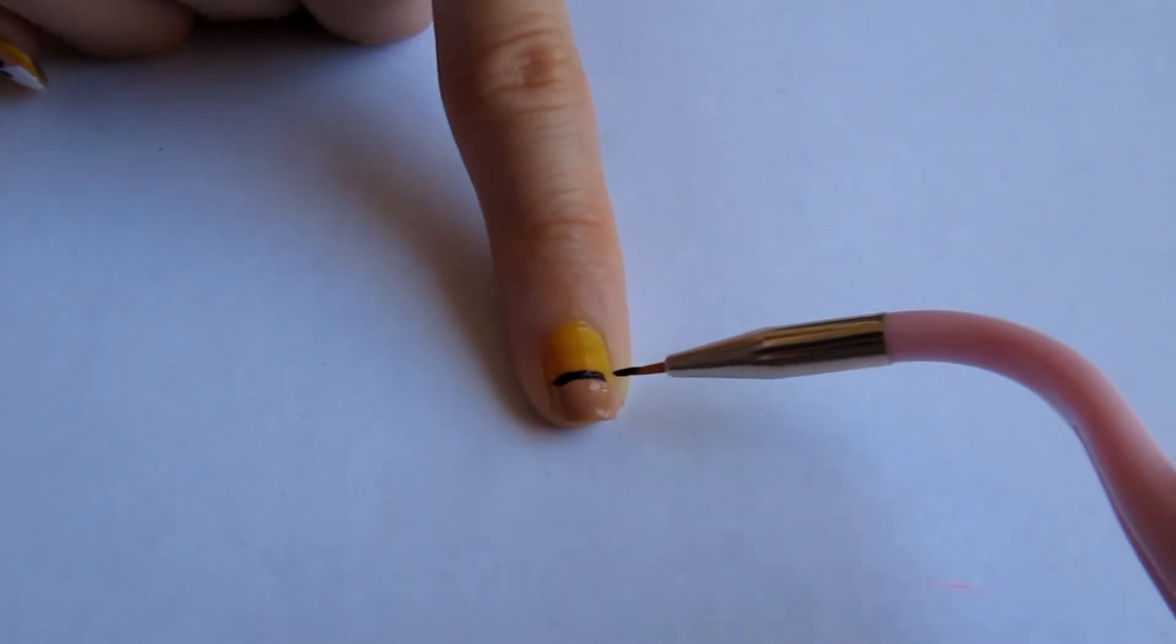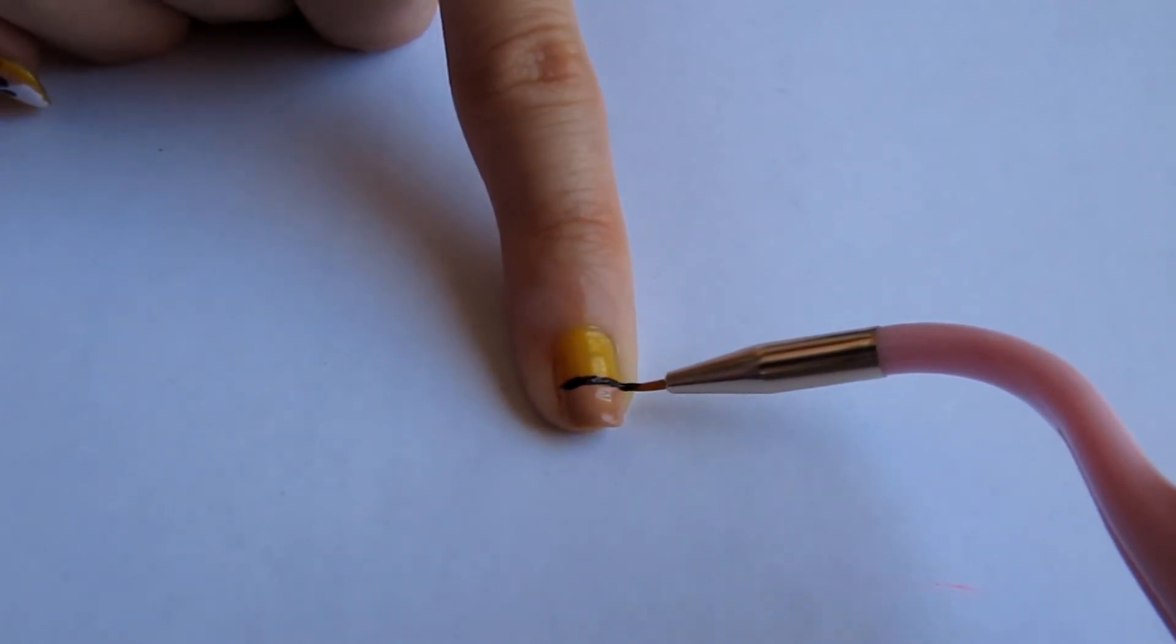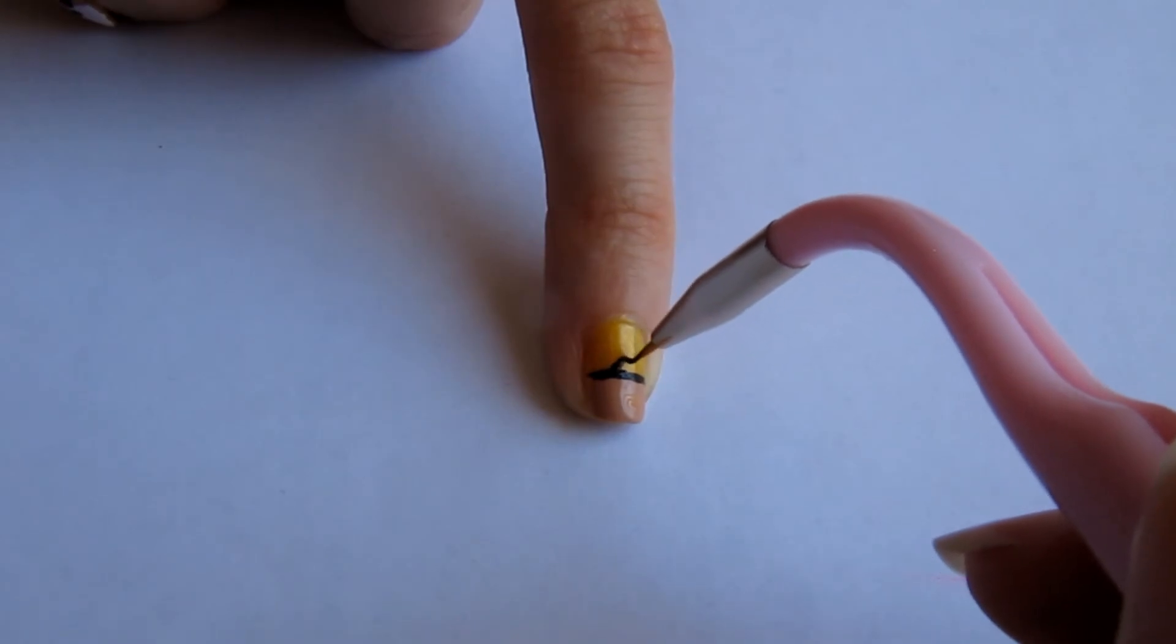I'm using a tiny brush to outline the suitcase in black and then draw in a little handle.